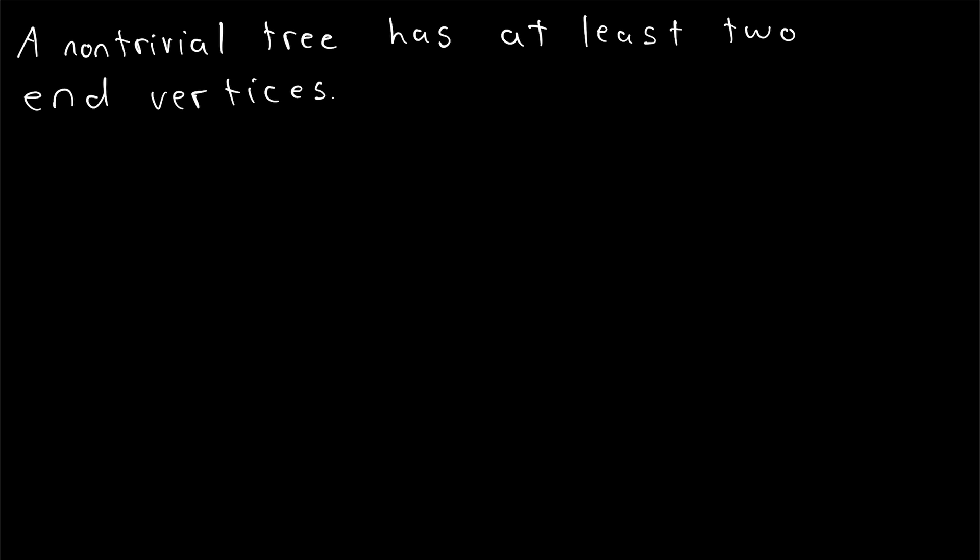Before we get into the proof, I want to quickly mention one of the things that's useful about this result. Suppose we're trying to prove something about some general class of tree graphs. Of course, in a proof, we don't know exactly what our tree graph looks like. But say we're in the induction step of an induction proof, where we're using induction on the number of vertices in a tree graph.